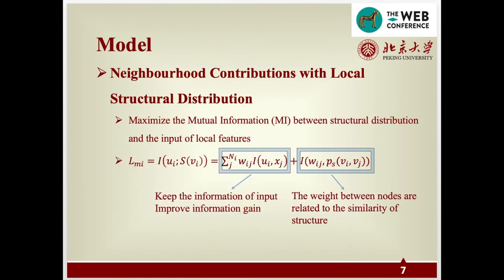Not only the structural information, we also want to maintain the input feature in our model. Therefore, we design a loss function which aims at maximizing the mutual information between structural distribution and the input of local features, where UI is the structural embedding of node I and XJ is the input feature of node J. The first term tries to capture the input feature, while the second term maintains the similarity of structure.